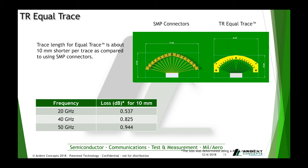We noticed the trace length for the Equal Trace to the device is about 10 millimeters shorter than compared to the SMP connector. To quantify that: at 20 GHz, you're losing about half a dB, and at 50 GHz, you're losing a full dB. You're trying to get the best signal possible for your program, and half a dB or definitely a full dB could be the difference in your decision. By shortening those trace lengths and making those traces equidistant — without having to route with serpentine traces — you have an ideal solution with the TR Equal Trace.